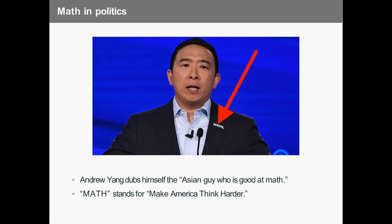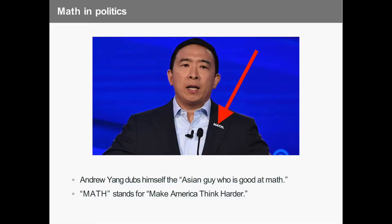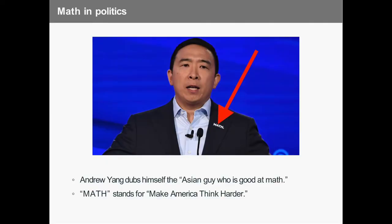The third instance of math really coming to the forefront of politics is Andrew Yang, one of the Democratic presidential candidates. He has a pin that says 'math' and sells hats that say math on them. He calls himself 'the Asian guy who's good at math' — one of the many ways you could be the polar opposite of Trump. Apparently just saying 'math' didn't poll well, so he had to make it an acronym: Make America Think Harder. I don't know who his PR team is, but he's got to change them.